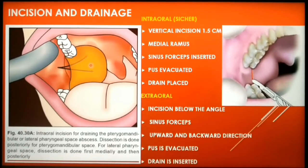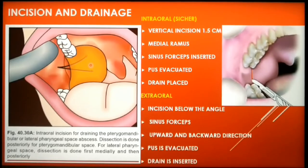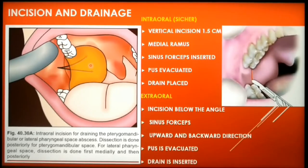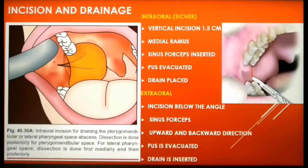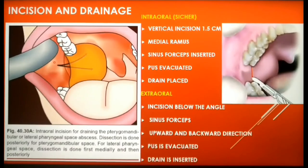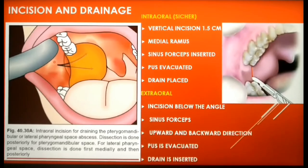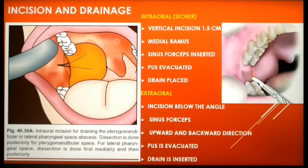The oral approach is less feasible in infected patients with trismus. In such patients, the oral approach can compromise the airway postoperatively because of persistent blood and pus oozing from the incision. Also, there are chances that the drain which is sutured will loosen and the patient can aspirate it. In such cases, an extraoral approach can be taken: an incision is made in the skin below the angle of the mandible, a sinus forceps is inserted towards the medial side of the ramus in an upward and backward direction, pus is evacuated, and a drain is inserted from an intraoral approach and sutured in position.